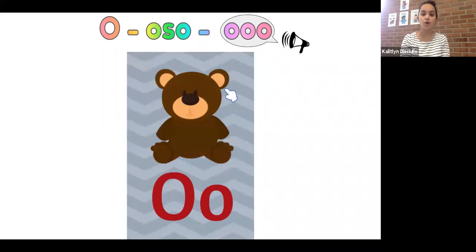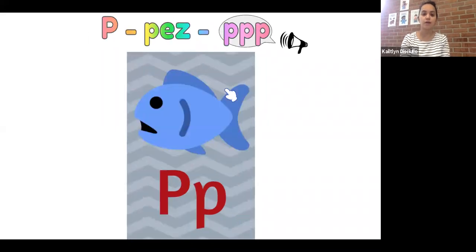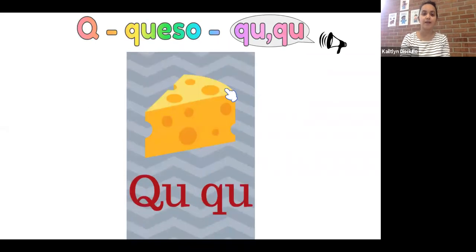O, oso, O. P, pez, P. Q, queso, K. Si ven aquí la Q y la U siempre va a estar juntas, pero hace sonido K.